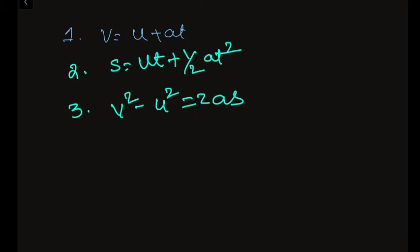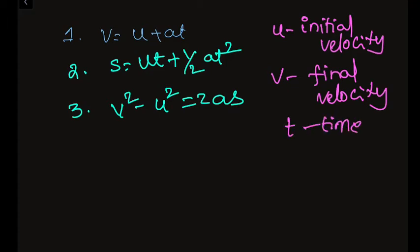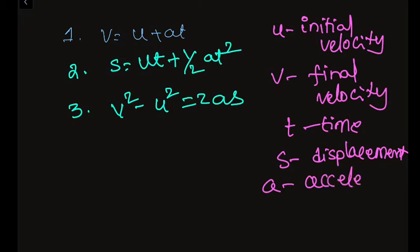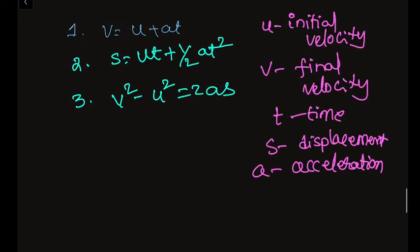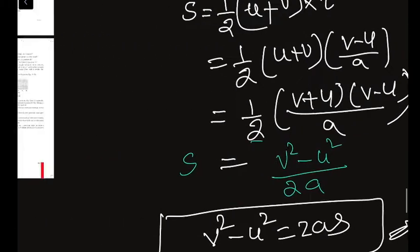Here the parameters are: U is initial velocity, V is final velocity, T is time, S is total displacement, and A is acceleration. These three equations are very very important. We discussed them in the previous video.